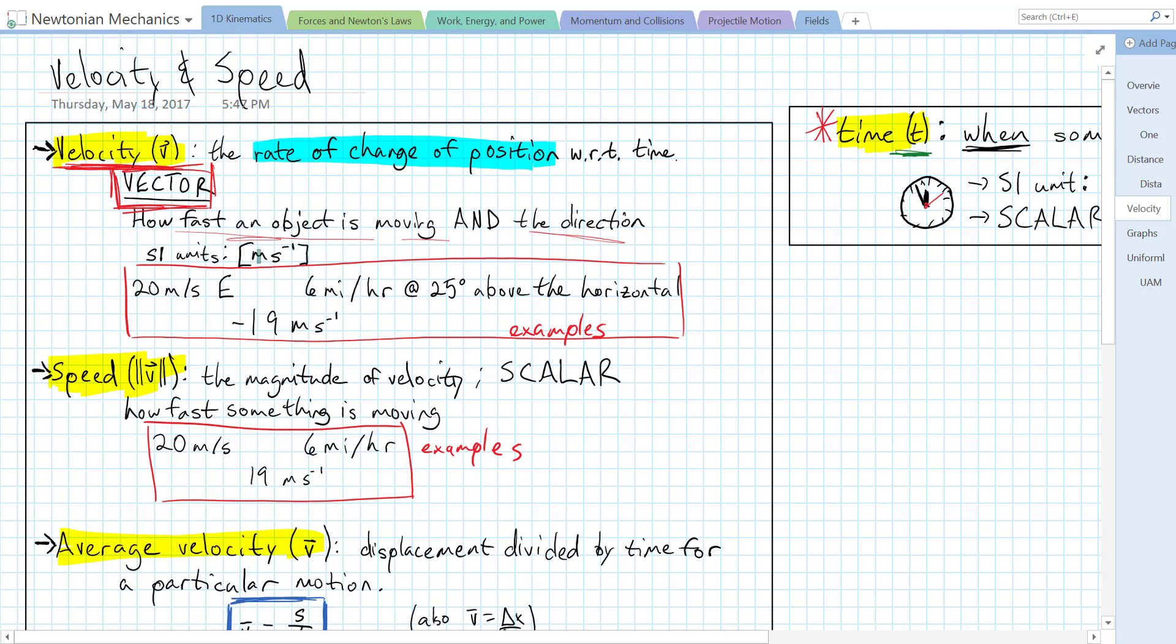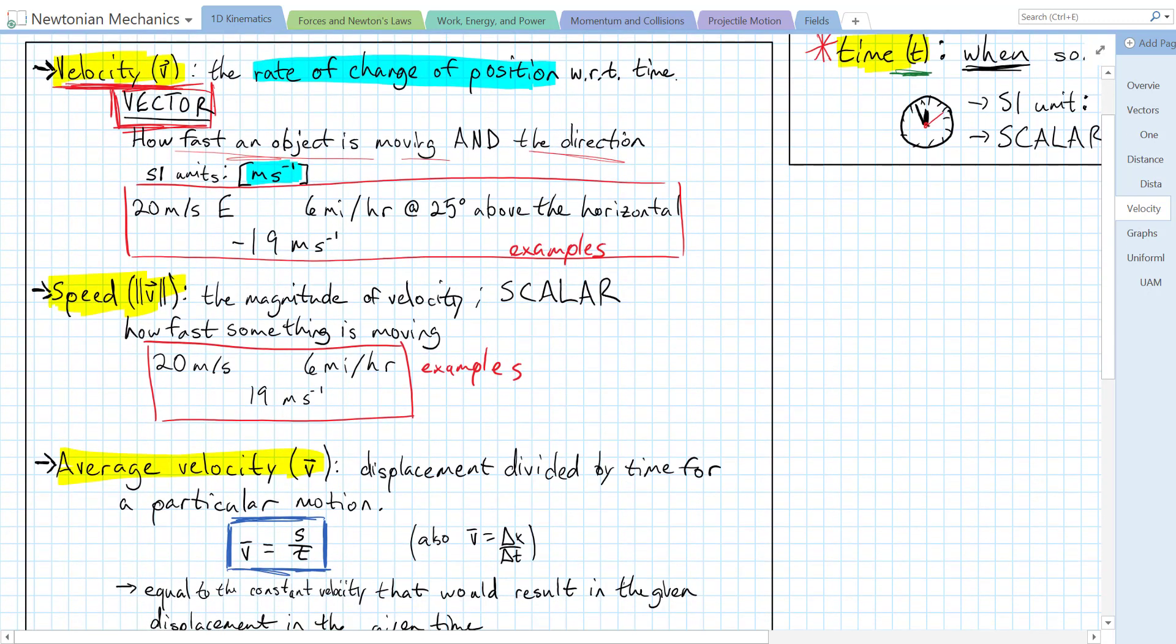Because velocity is the rate of change of position with respect to time, it's going to have units of length divided by time, distance per unit time. So the SI units are going to be meters per second. Remember, velocity is the vector form, so we always need a direction for it to be the velocity.